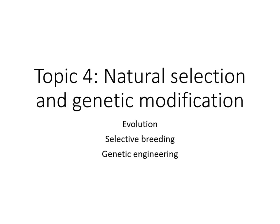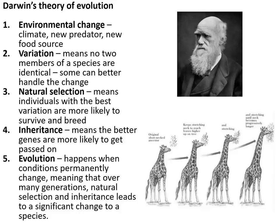Topic four: natural selection and genetic modification. Darwin's theory of evolution starts with environmental change — a new predator, climate change, or similar. Variation means some members of the species are better able to handle that change. Natural selection means those with better characteristics are more likely to survive, breed, and pass on their genes.